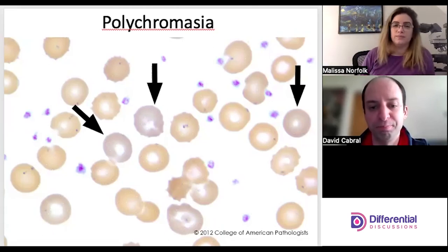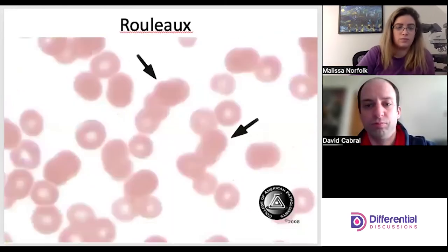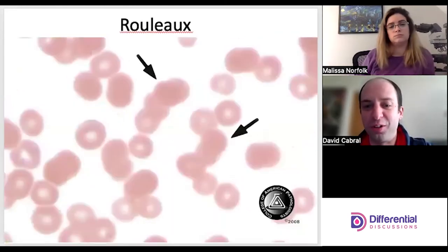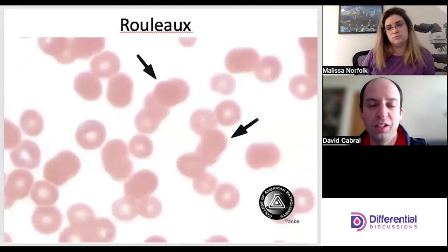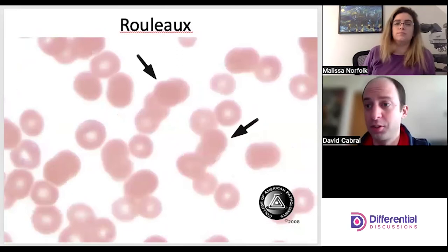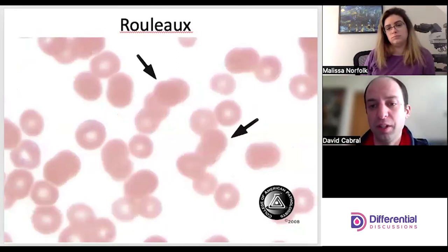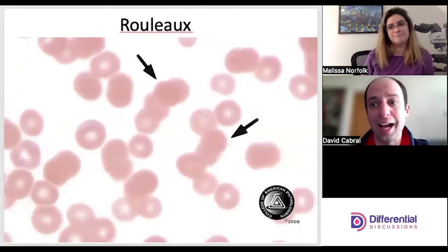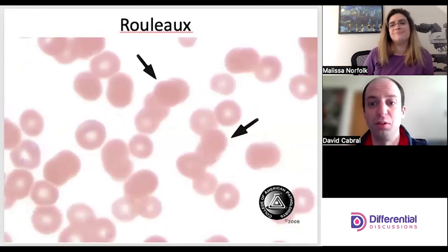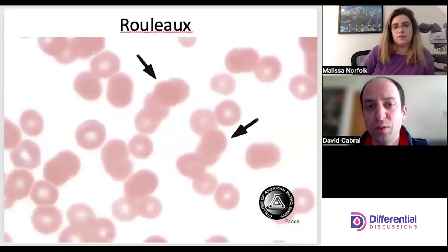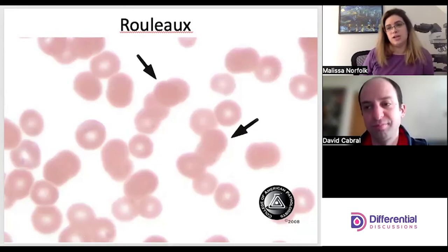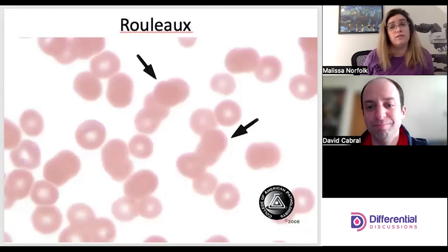Rouleaux — stack of dimes, pretty self-explanatory. One pitfall is that if you're in the wrong area of the slide you can see artifact that appears to be rouleaux. This is caused by a buildup of protein, which is different from agglutination, which is antigen-antibody interaction — you're telling the physician two very different things when you call one versus the other.